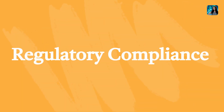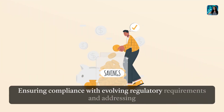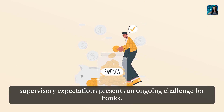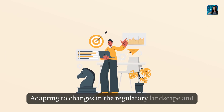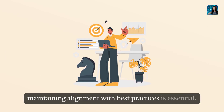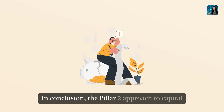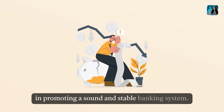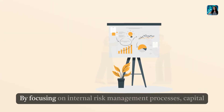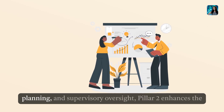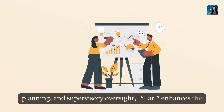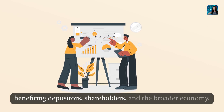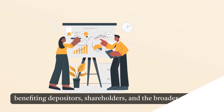Regulatory Compliance. Ensuring compliance with evolving regulatory requirements and addressing supervisory expectations presents an ongoing challenge for banks. Adapting to changes in the regulatory landscape and maintaining alignment with best practices is essential. In conclusion, the Pillar 2 approach to capital adequacy assessment in banks plays a critical role in promoting a sound and stable banking system. By focusing on internal risk management processes, capital planning, and supervisory oversight, Pillar 2 enhances the resilience and risk management capabilities of banks, ultimately benefiting depositors, shareholders, and the broader economy.